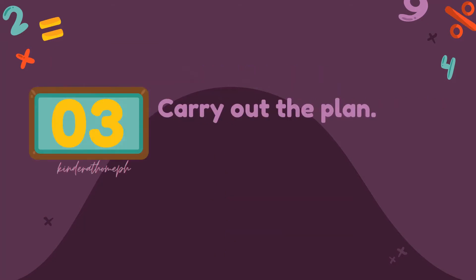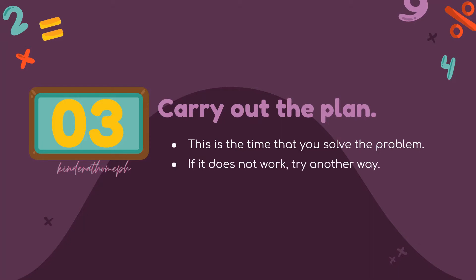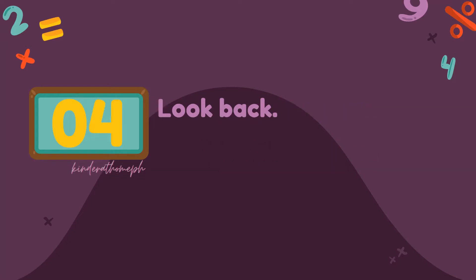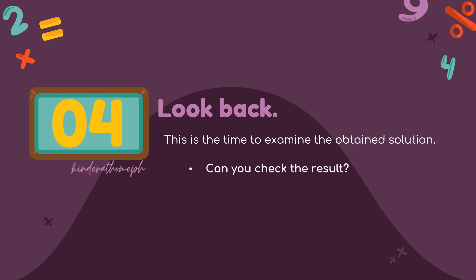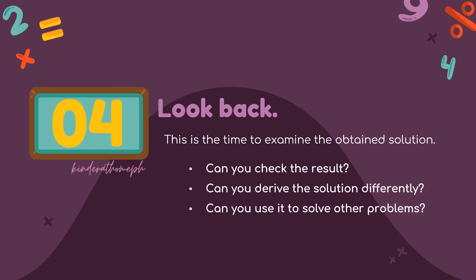Now that we have devised a plan, we are ready to solve the problem using that plan. But sometimes we later realize that our plan does not work — don't worry, because we can always try another way. Once the plan has successfully worked, we have to look back to know if we did the right thing. We can also try a different solution and see if we arrive at the same answer, or check if we can use our solution to solve other problems.